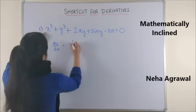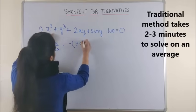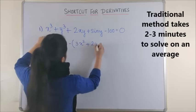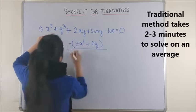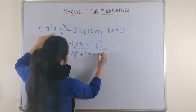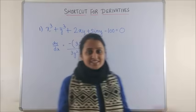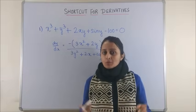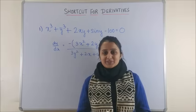Looking at the derivative, it would be minus 3x square plus 2y upon 3y square plus 2x plus cos y. That's it, you got your answer. Want to learn the trick? Let's get started with the video.